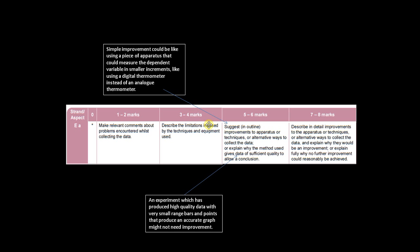Don't assume by the way that an experiment always needs to be improved. An experiment which has got high quality data, in other words very small range bars and all the points produce an accurate graph so a nice straight line or nice curve, might not need any improvement. Now to be honest the chances of such an experiment occurring is quite small and it's much more likely that you can improve your experiment in at least two ways and all these improvements should be listed.